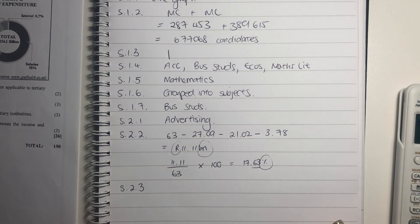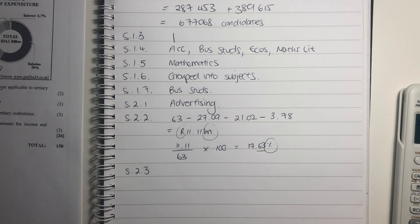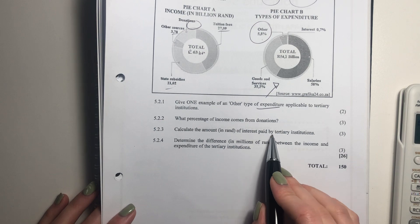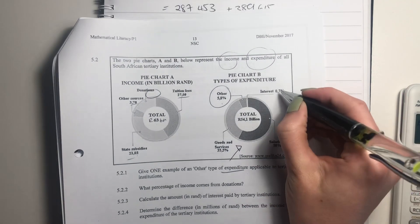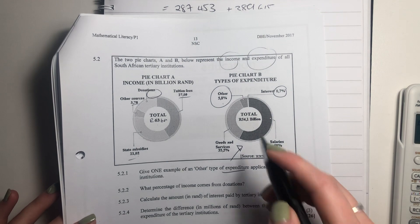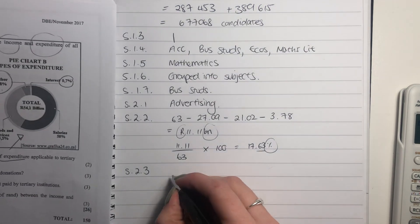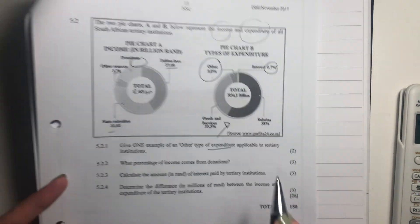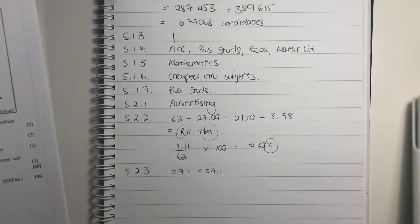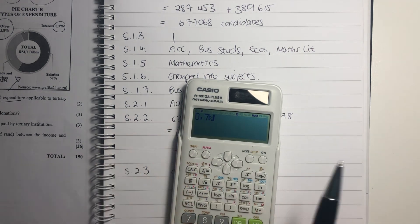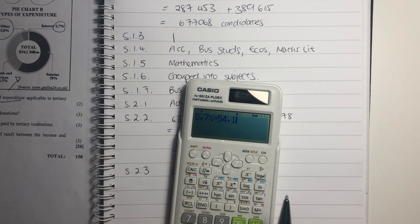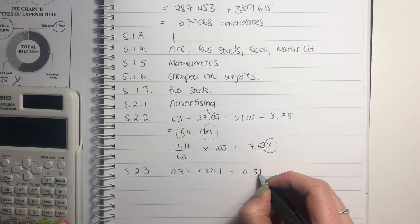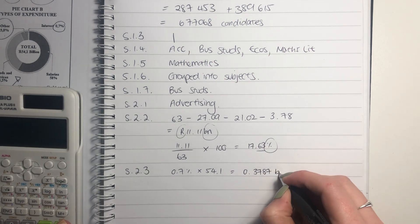5.2.3. Okay, we're doing well here, guys. Almost done. Calculate the amount in rands of interest paid by tertiary institutions. Now, interest is 0.7% of my total expenditure. So I'm going to say 0.7 times 54.1 billion, because that's what it is. Let's plug that into our calculator.